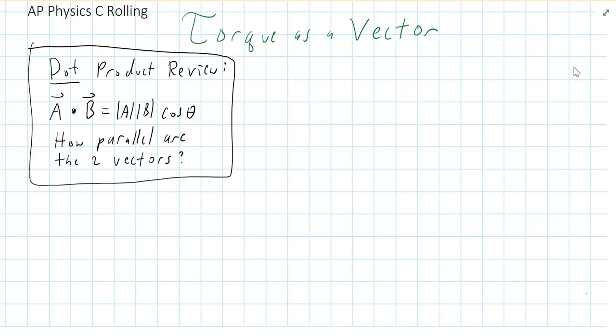For instance, if two vectors are in the exact same direction, the angle is zero and cosine of zero is one — that's the maximum, so that's your max dot product. Torque, on the other hand, is not a dot product — it is a cross product. It measures how perpendicular the two vectors are.